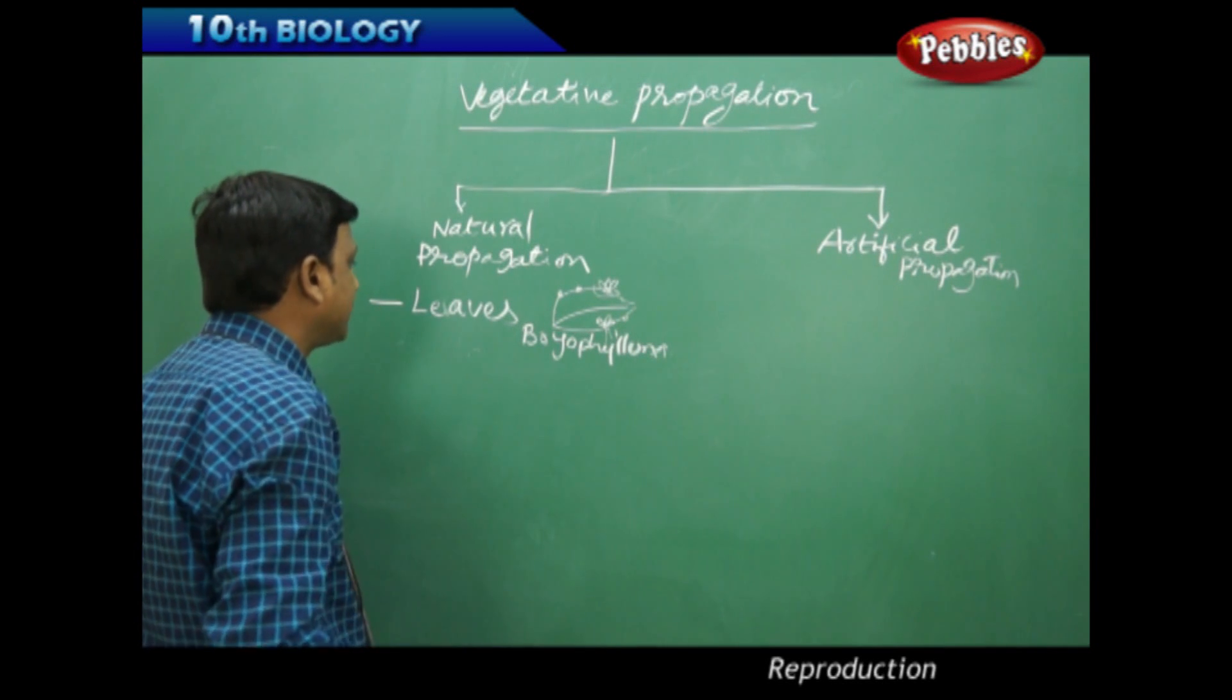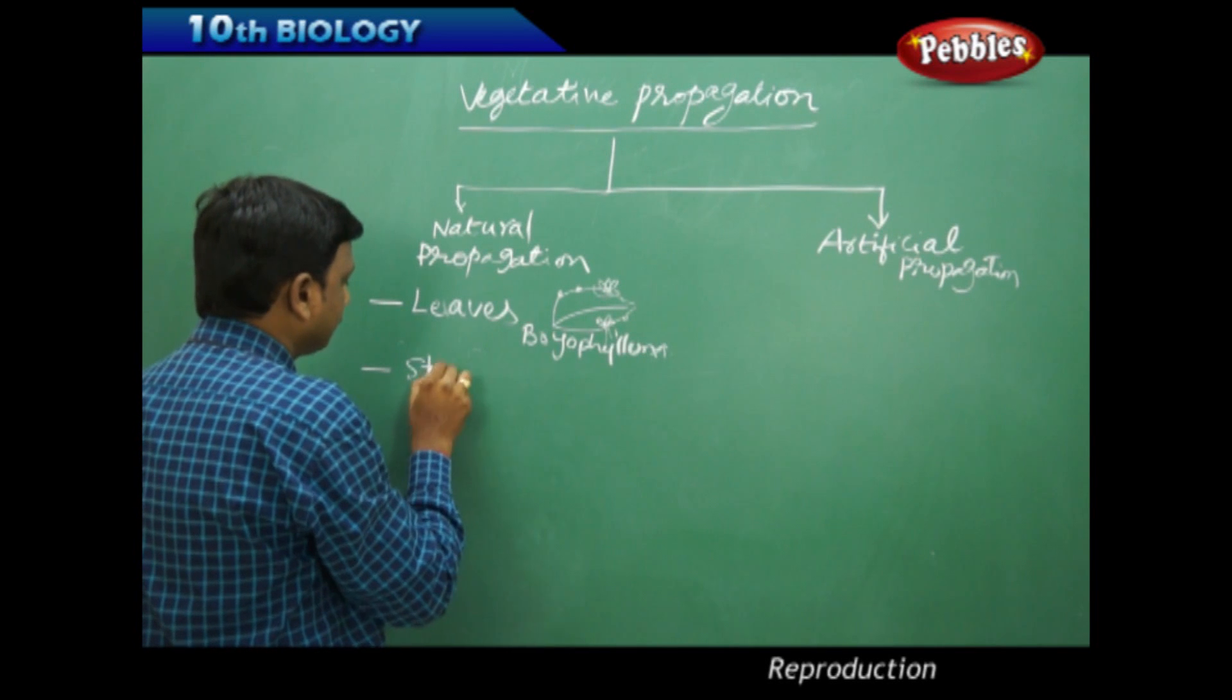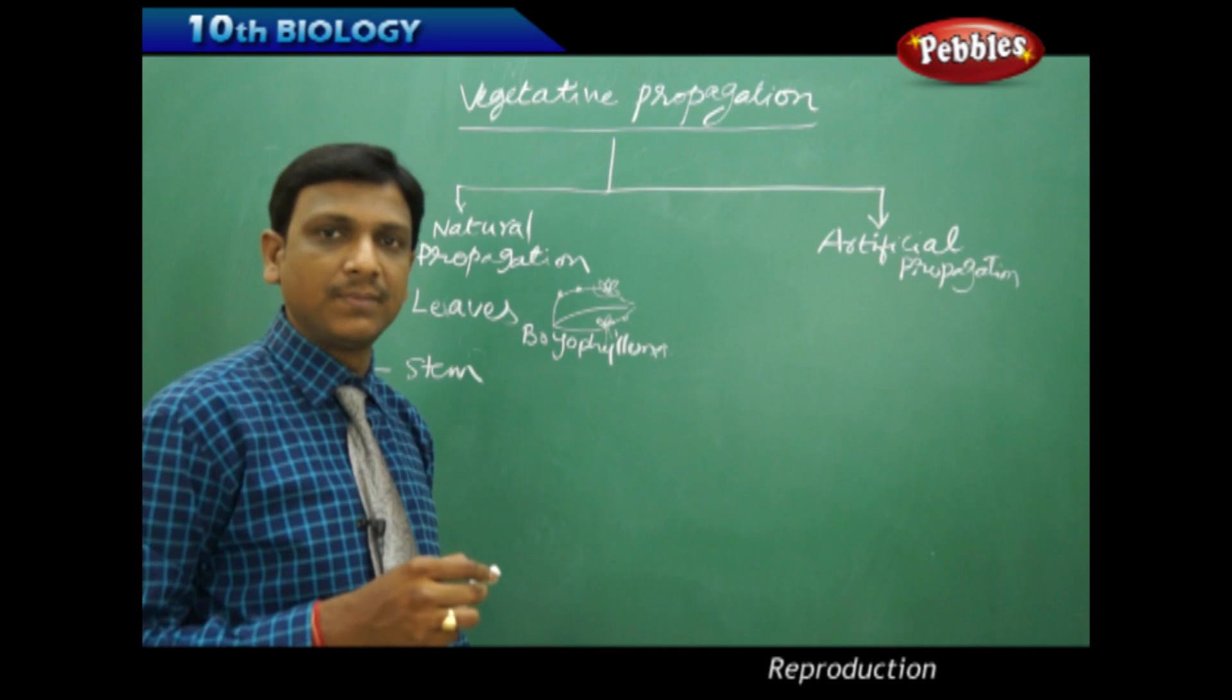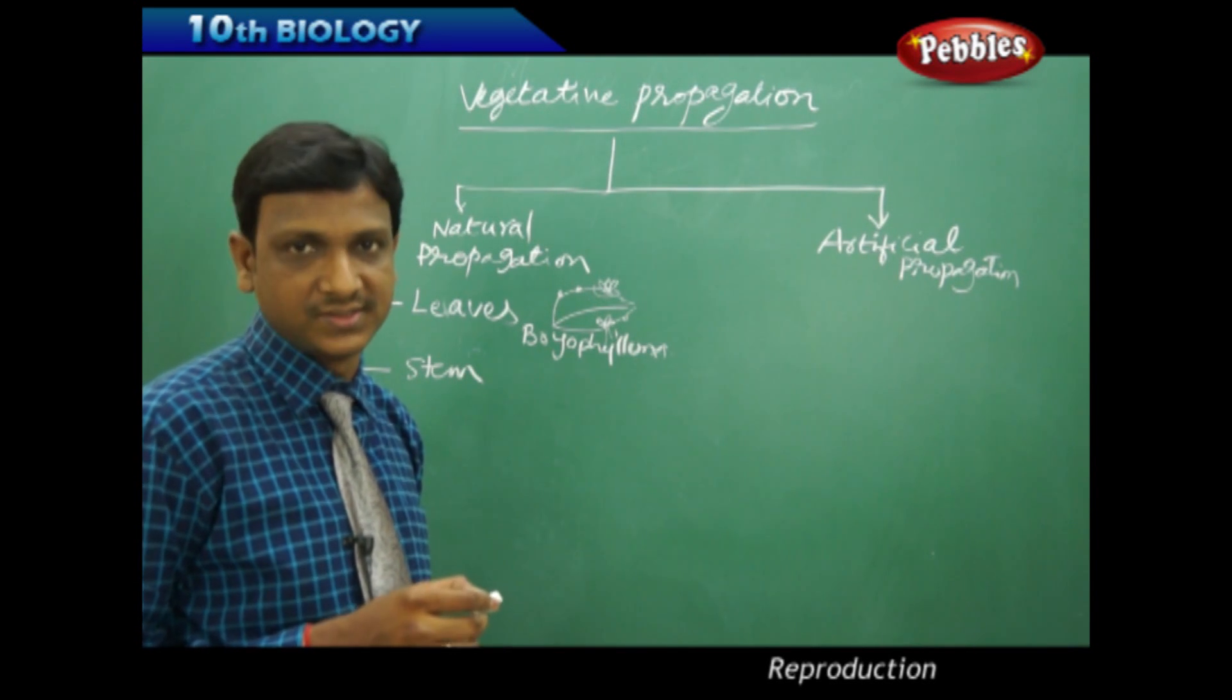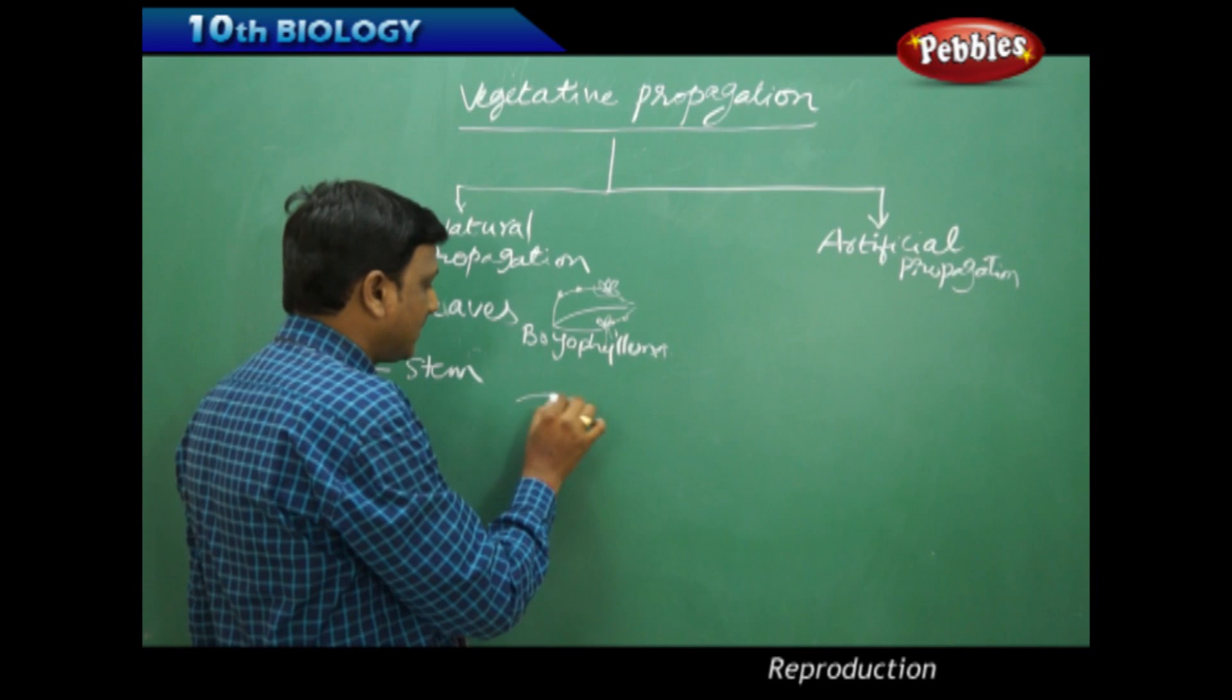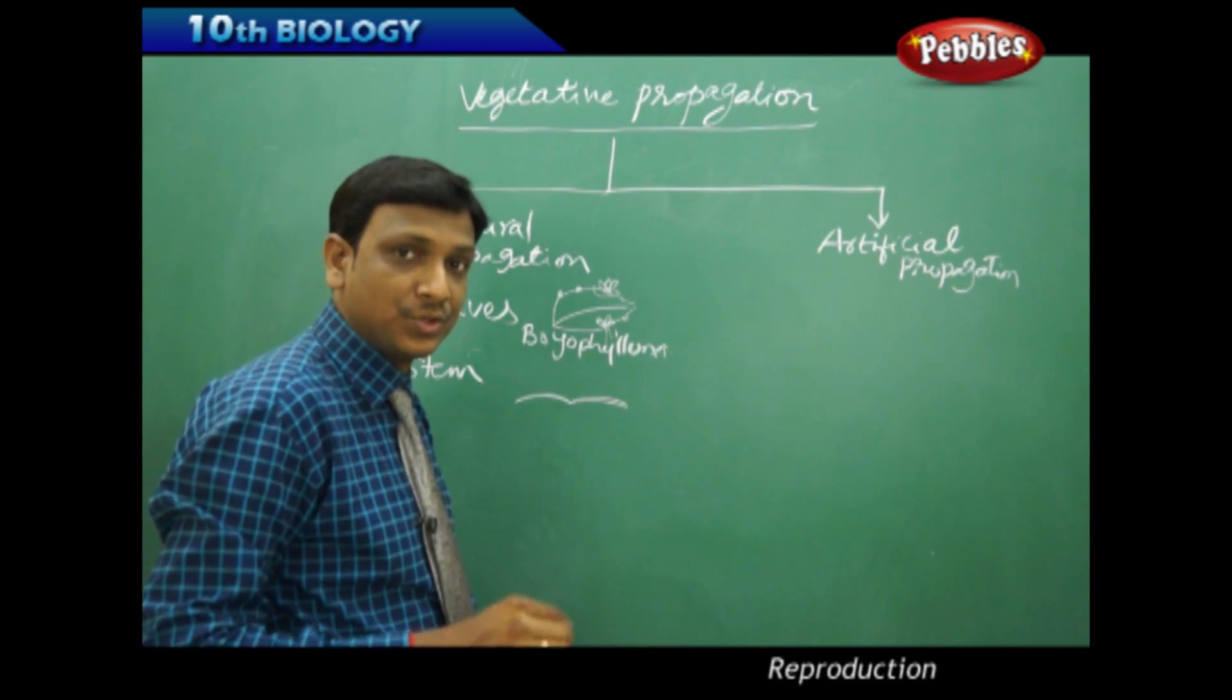Now let us look at the next one, stem. Vegetative propagation through stem. Certain plants like stolons and runners which have very weak stem, they run on the ground.